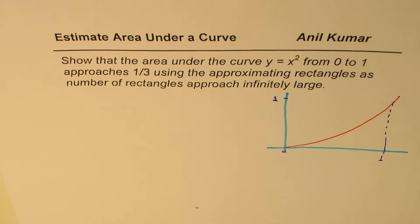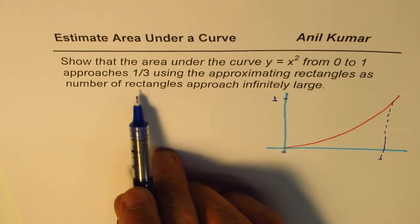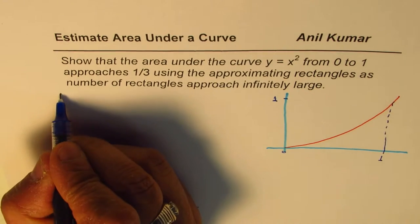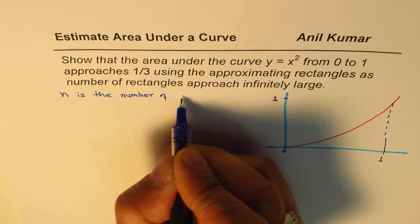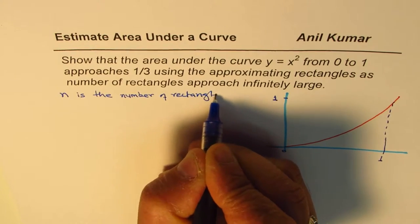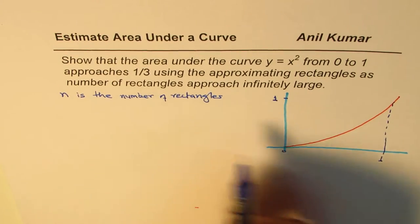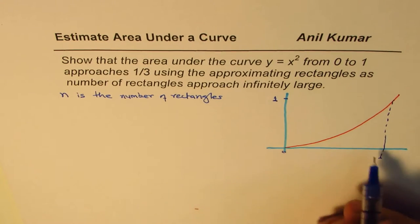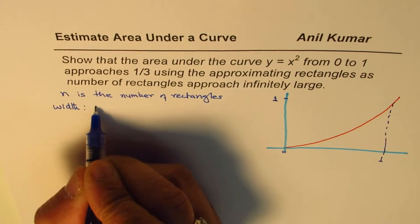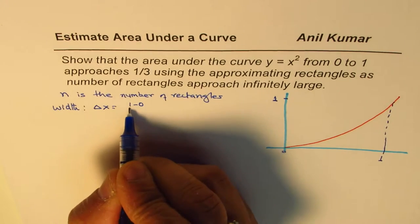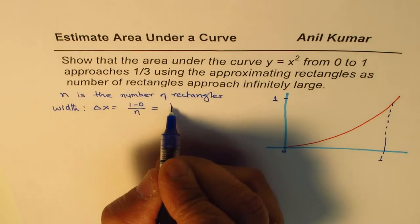Now we need to find the area under this curve, rather show that this area is 1 over 3. That is the idea and we have to use rectangles, sum of the rectangles to find this area. So in this particular case we want to use infinitely large number of rectangles. Let us say n is the number of rectangles. When I'm saying n is the number of rectangles, basically I mean that this space is divided into n rectangles. So if I divide 0 to 1 in n rectangles, in that case the width of each rectangle will be, we call this as delta x, that will be 1 minus 0 divided by n. So the width will be 1 over n.